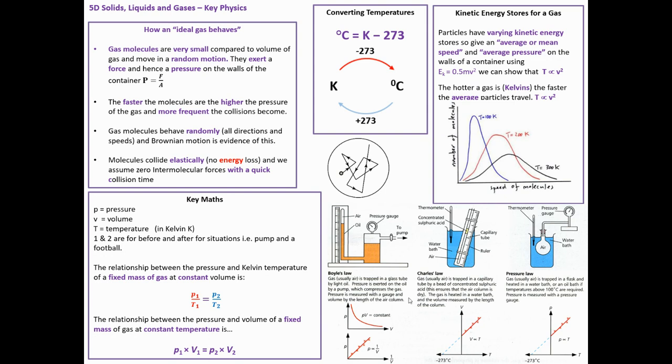We should know what Boyle's Law is, Charles' Law, pressure law. You get these crazy graphs where PV is this funny curve. But if I plot P against 1 over V, I find that P is proportional to 1 over V. So we get a straight-line graph. You should be able to do that.